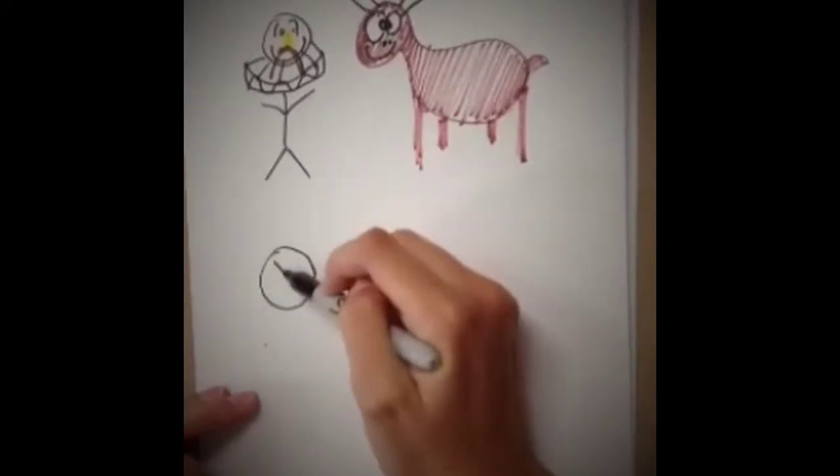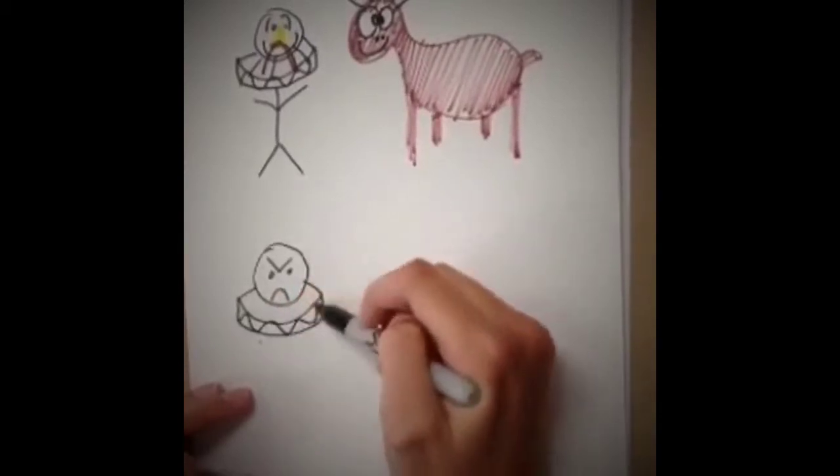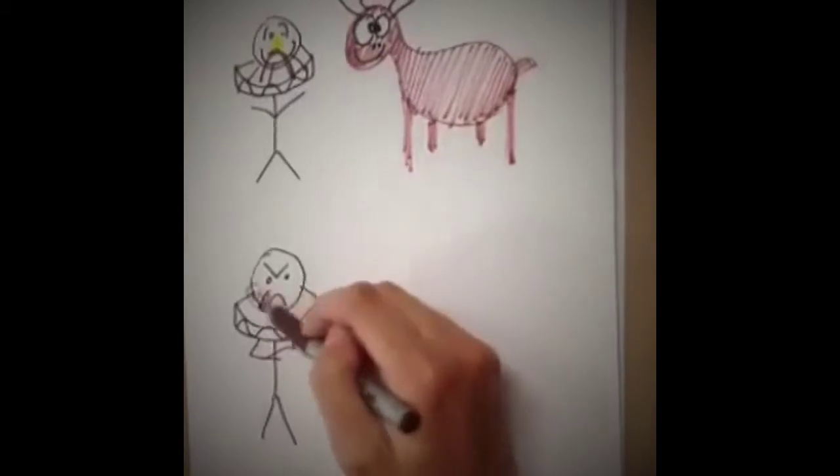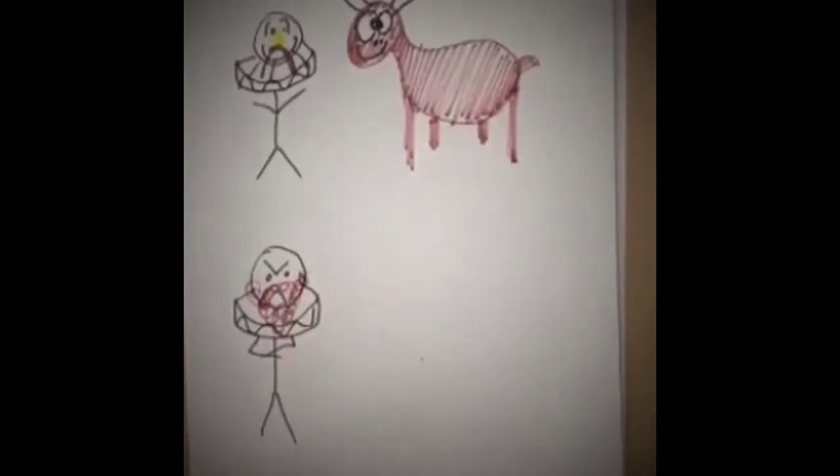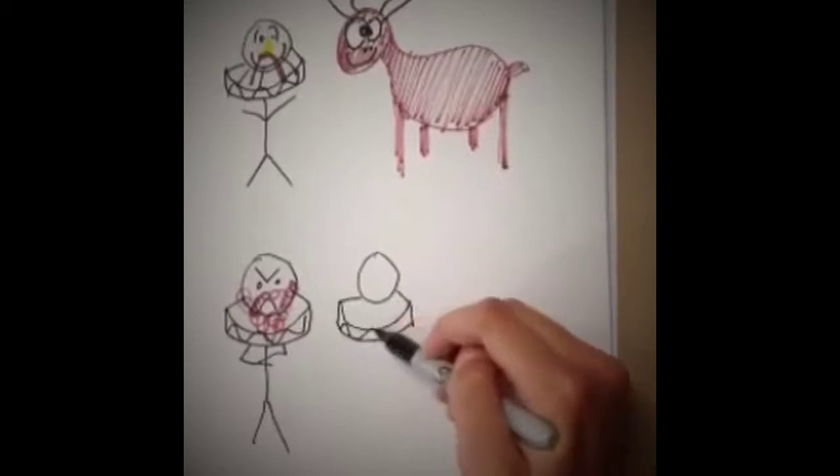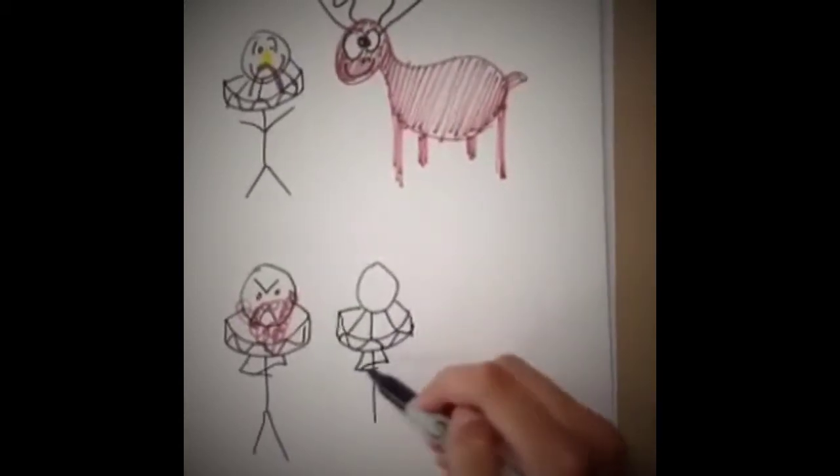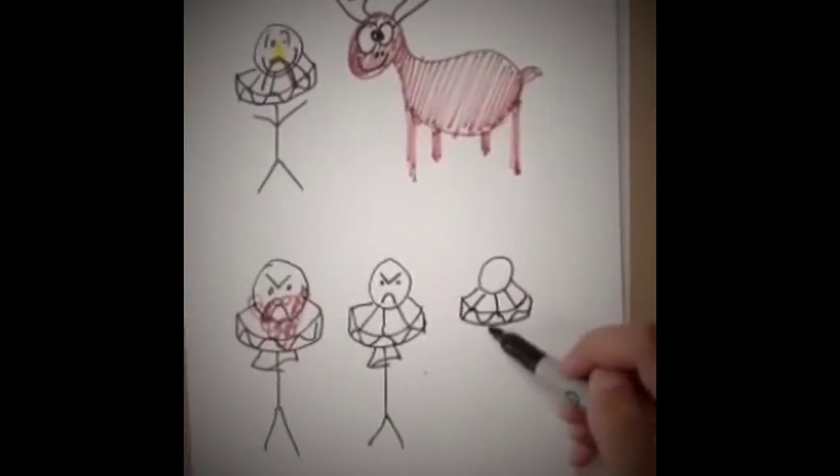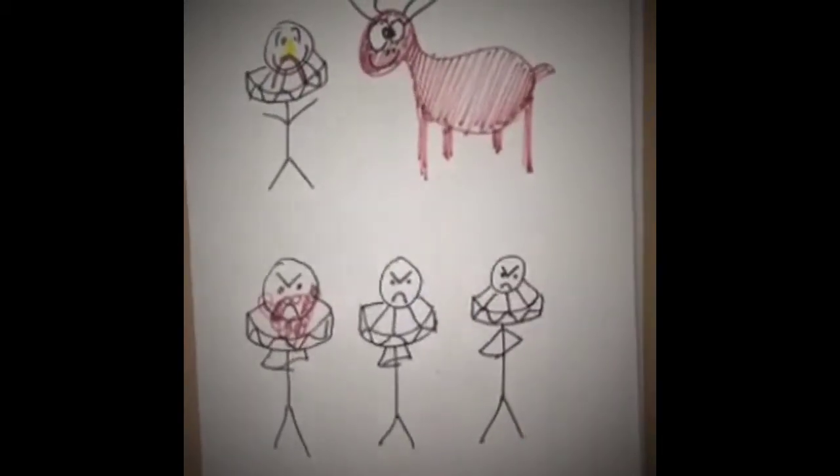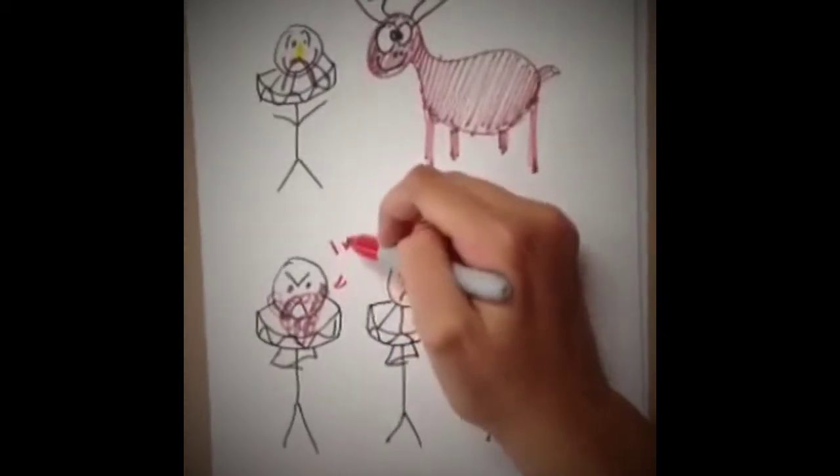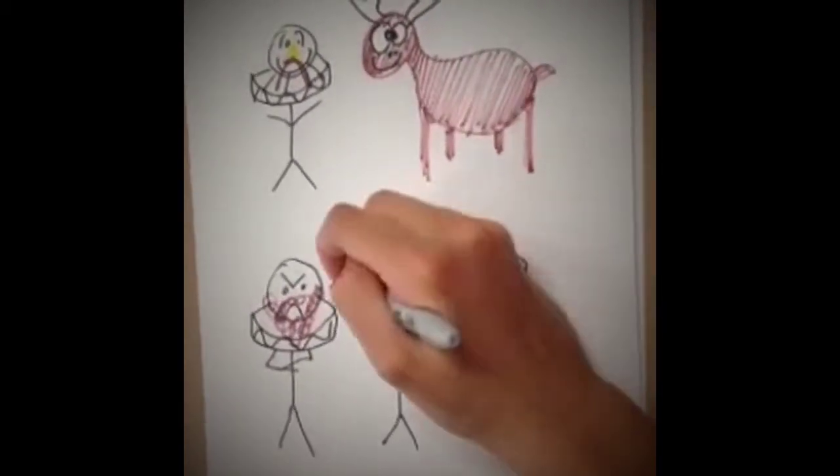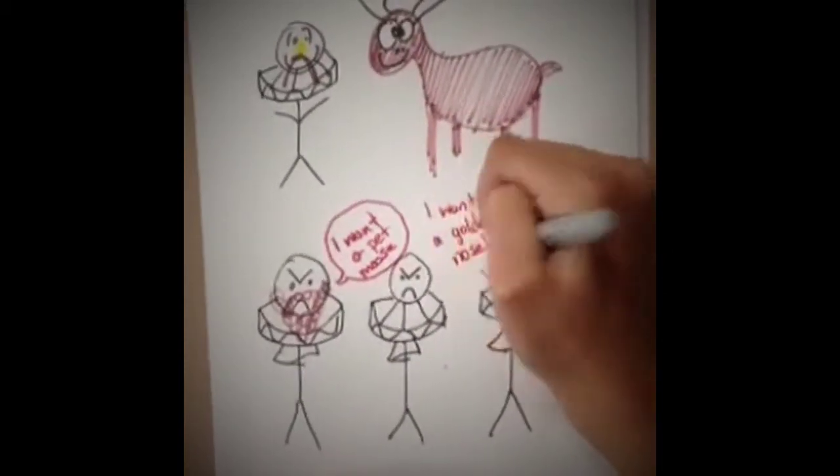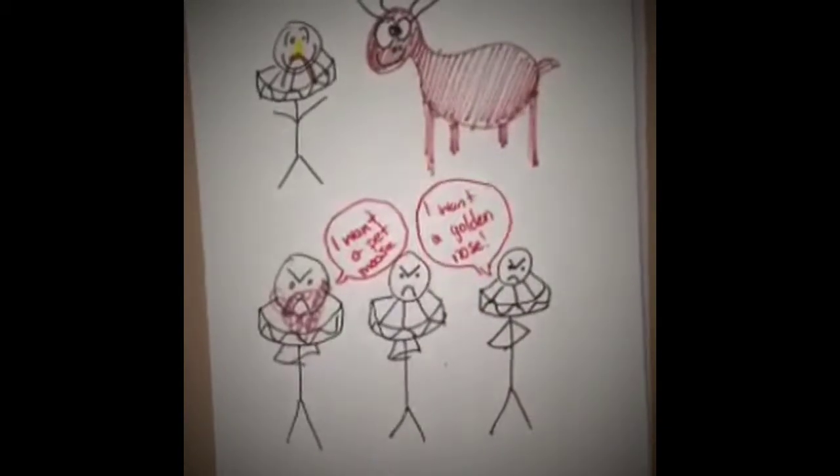Between Tycho's golden nose and his pet moose, it shouldn't be too surprising that other scientists were jealous of this dashing young fellow. I know I'm jealous. I mean, just look at that moose named Moosey. And that's Kepler right there on the left. That's the left. Yes, that's the left on the left, not the right. Saying, I want a pet moose. Why can't I have a pet moose? And I want a golden nose. Why can't I have a golden nose? Nobody knows. I just want a golden nose.